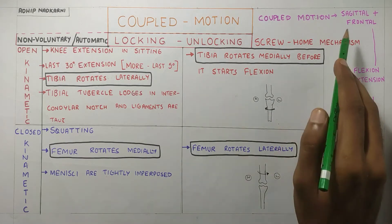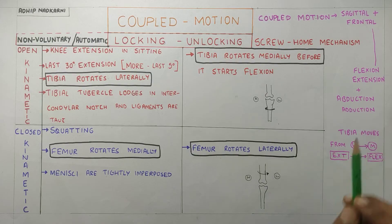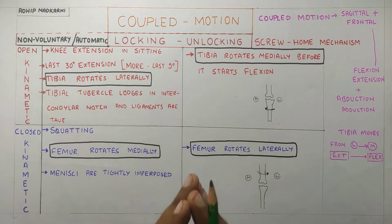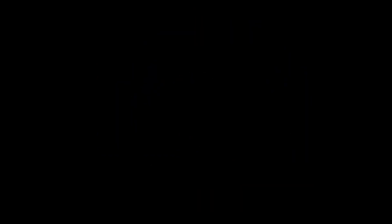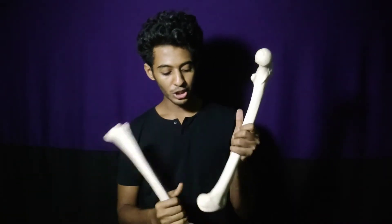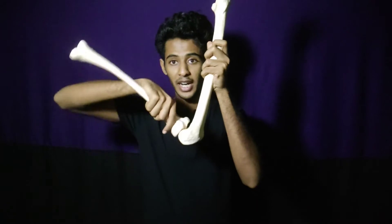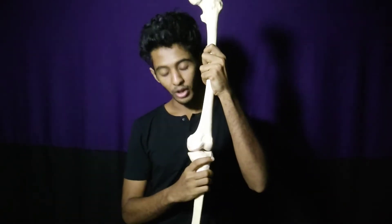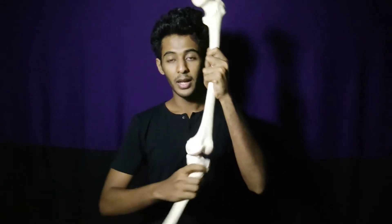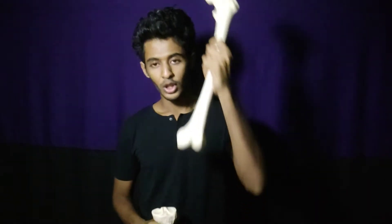Let us see how this occurs practically. The movement occurring at the knee joint is flexion and extension, and also abduction and adduction — that's why it's called coupled motion. That is, it's not purely a sagittal plane movement; there is some amount of abduction and adduction occurring in the frontal plane as well.